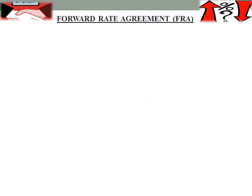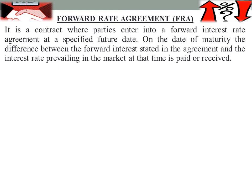Next is forward rate agreements. A forward rate agreement is a contract where parties enter into a forward interest rate agreement at a specified future date. On the date of maturity, the difference between the forward interest rate stated in the agreement and the interest rate prevailing in the market at that time is paid or received.